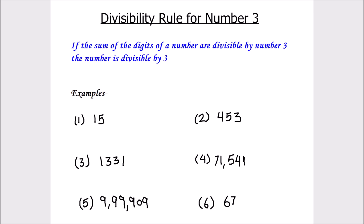Let's have some examples to clarify this. We have the first example as number 15. In number 15, we have two digits, 1 and 5, and the sum of the digits 1 and 5 is 6. And 6 is fully divisible by number 3. So the number 15 is divisible by number 3.